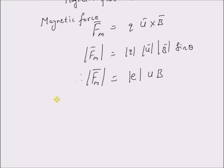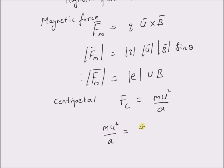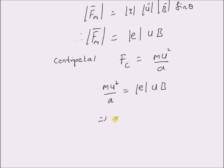This force is balanced by a centripetal force. Since the particle is moving in a circle, the magnetic force is balanced by the centripetal force F_c, which is defined as m·u² over the radius a. Therefore, the centripetal force m·u²/a is equal to the charge e — the absolute value of e — multiplied by u times B. By simple algebra, the radius of the circle a is equal to m·u divided by the absolute value of e times B.